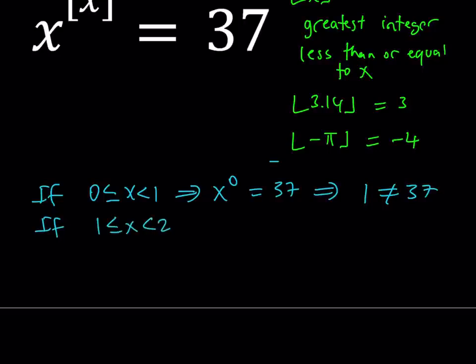So, if x is between 1 and 2, then the floor value of x is going to be 1. So, x to the power of 1 is going to be 37. Obviously, x equals 37 is not going to work because it's not between 1 and 2. So, we reject the solution.